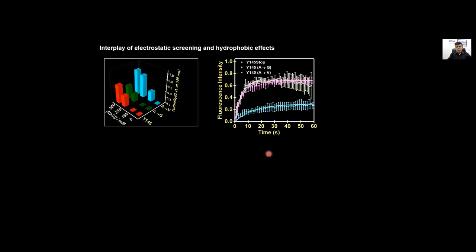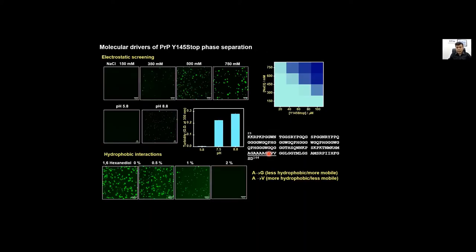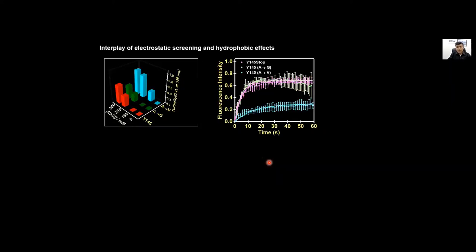In order to test that we made these mutations: alanine to glycine to make it less hydrophobic and alanine to valine to make it more hydrophobic. We showed that if you make it more hydrophobic the FRAP recovery becomes much slower which means they undergo liquid to more gel-like states, which indicated that hydrophobic effect is a key regulator of phase separation.